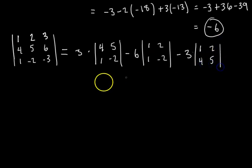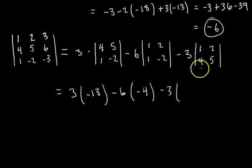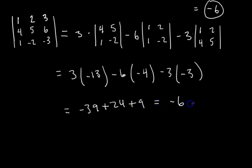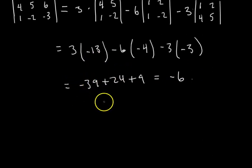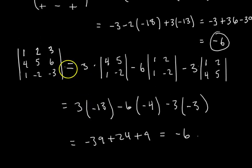Simplifying: 3·(−8 − 5) = 3·(−13) = −39. Minus 6·(−2 − 2) = minus 6·(−4) = +24. Minus 3·(5 − 8) = minus 3·(−3) = +9. So −39 + 24 + 9 = −6. The point is it doesn't matter which row or column you pick — you cofactor expand and get the right answer.